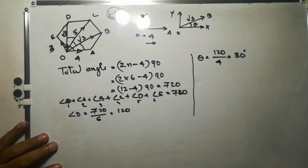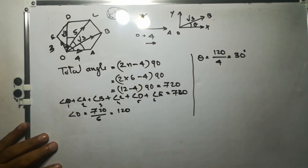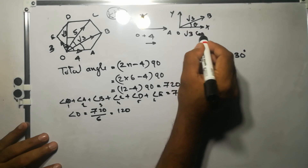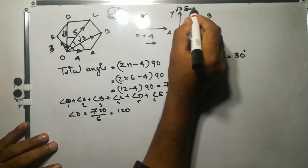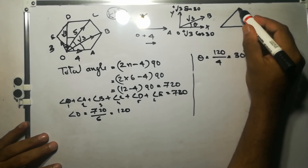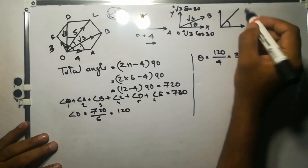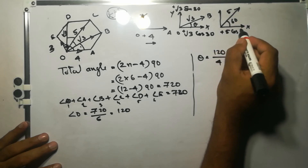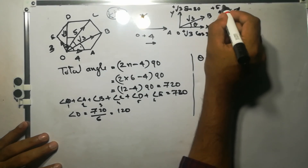Therefore, the horizontal component of OB (magnitude √3) is +√3 cos30°, and the vertical component is +√3 sin30°, both positive. For the next force OC (5 kN), the angle from the horizontal is 30° + 30° = 60°. So its horizontal component is +5 cos60° and its vertical component is +5 sin60° (written as +5 cos30° in vertical).